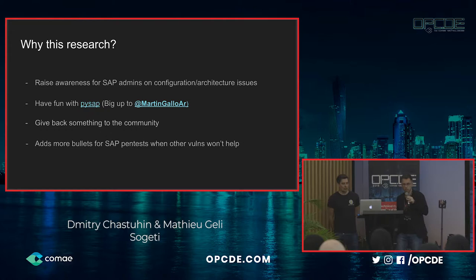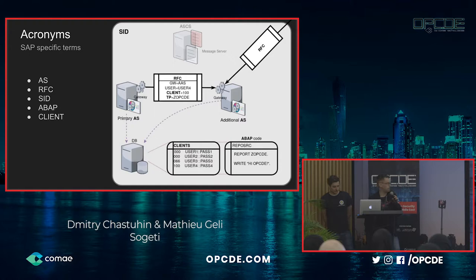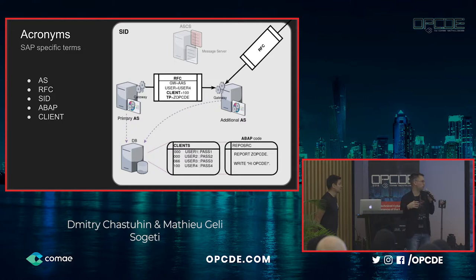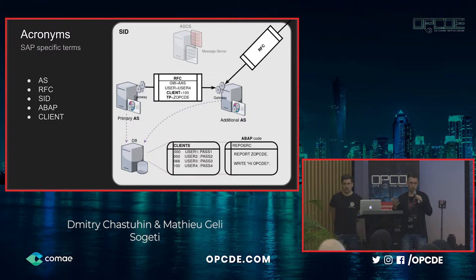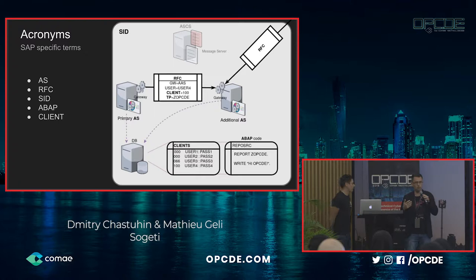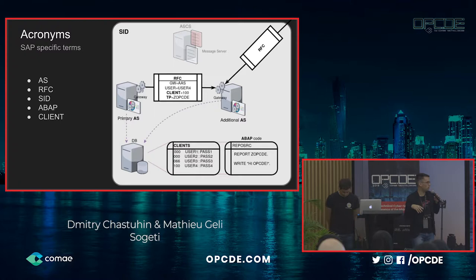When speaking about SAP, there are acronyms that can be misleading. SAP is a large German company selling enterprise solutions that implement business logic — HR processes, finance, supplier relationship management, customers, and so on. It's quite huge and complex software. AES stands for Application Server, which is where the business logic is executed. Different application servers can communicate and exchange information via a protocol called RFC — Remote Function Call.